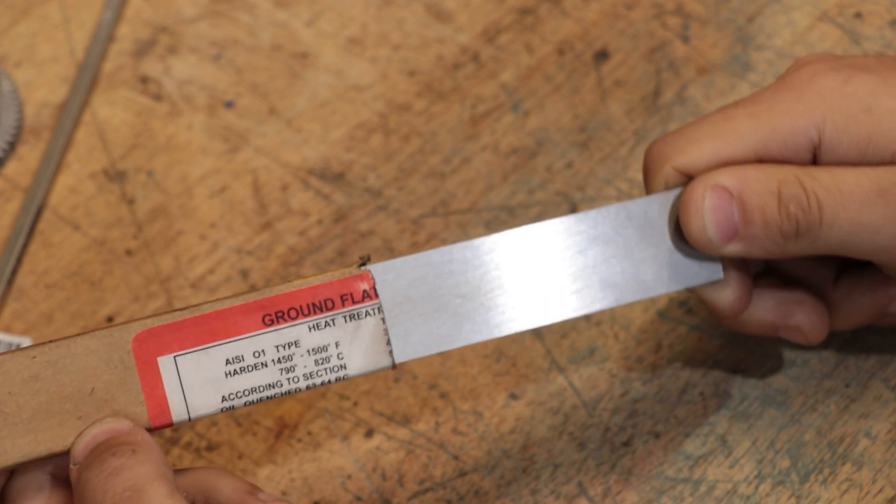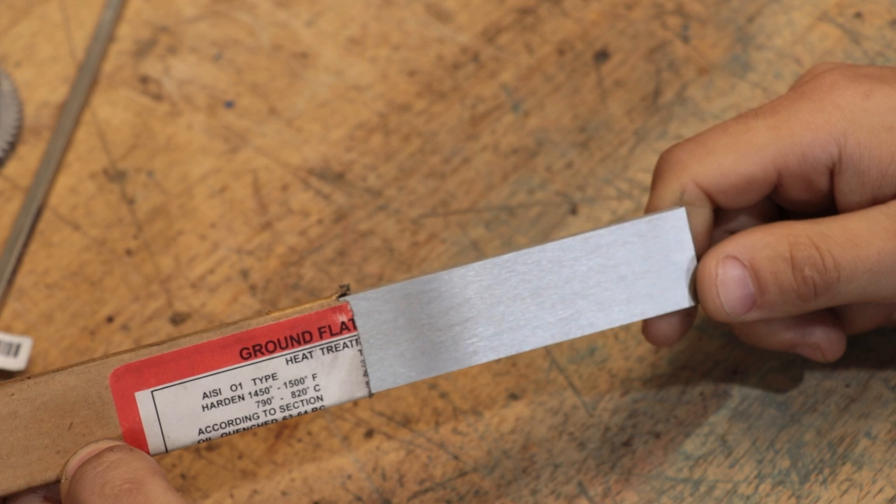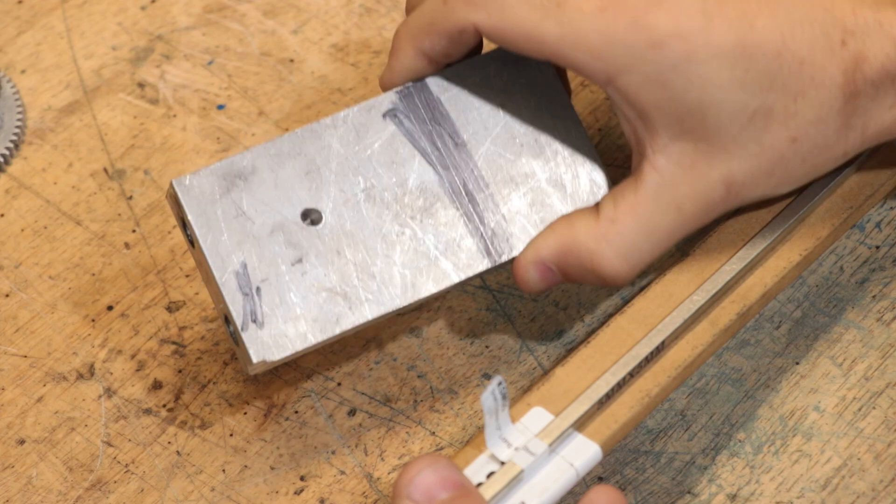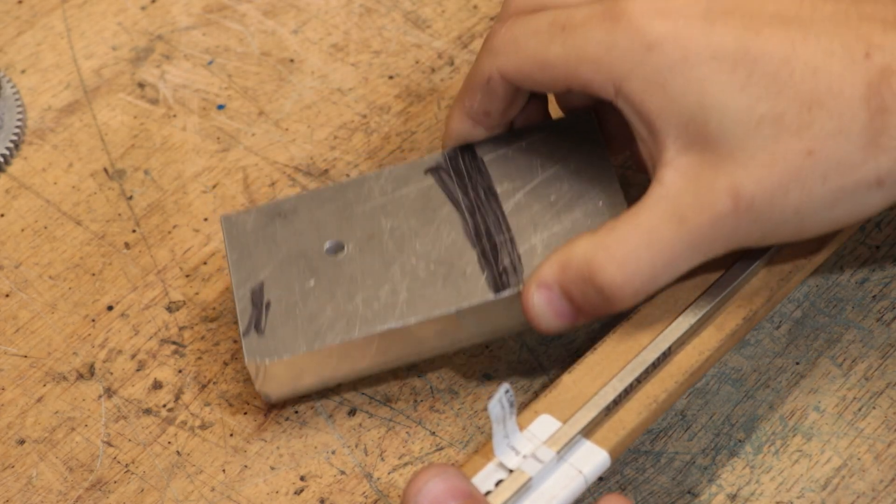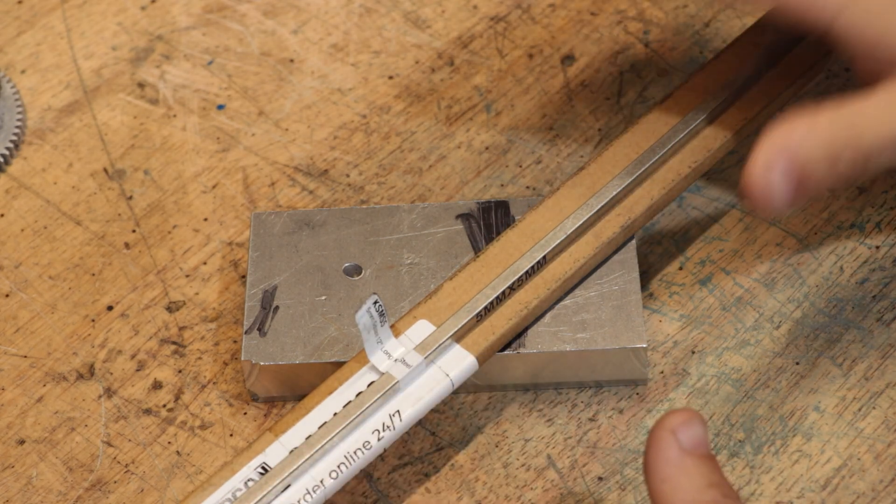O1 being that it's an oil quenching steel so we should hopefully get less distortion or at least less risk of distortion than if we were quenching it in water. Now before we start machining it I am going to make a small jig out of a piece of aluminium so we can hopefully hold it and accurately space the holes.